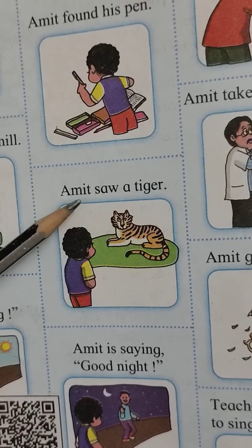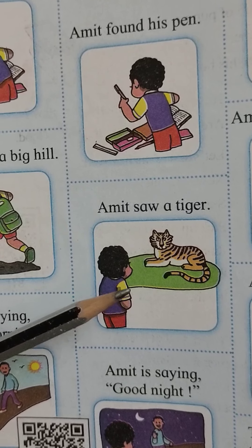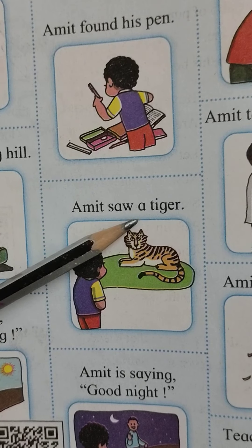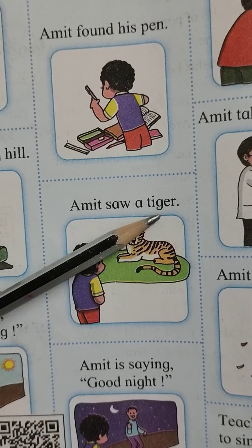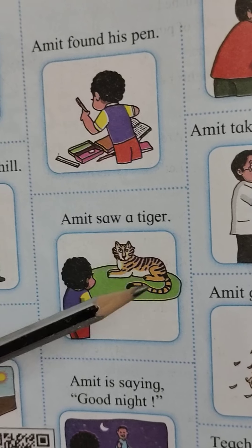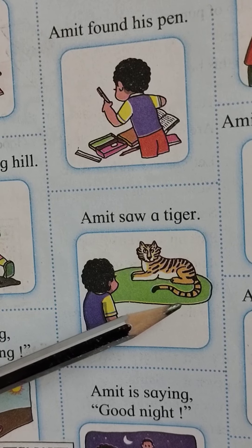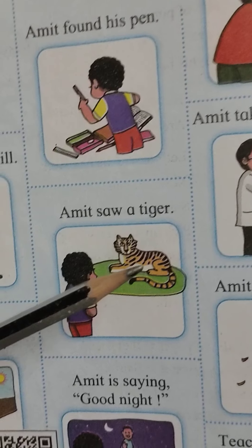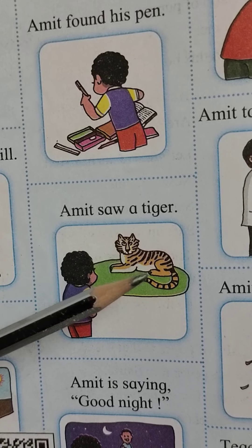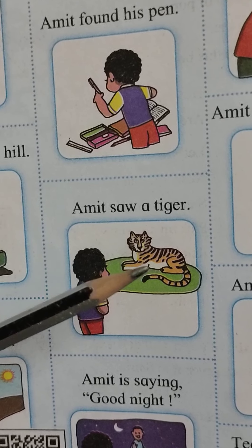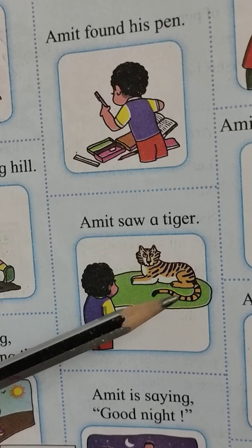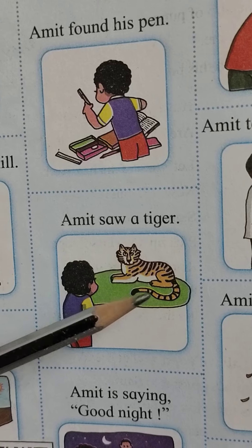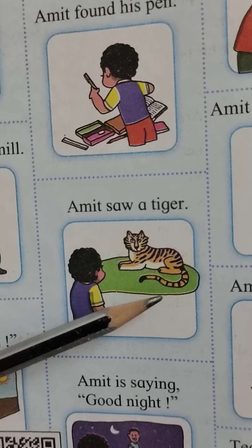See here. Amit saw a tiger. 'Saw' means 'zh bagne,' 'tiger' means 'zh waag' — Amit ni ekha tiger la bagitla. So tell me, if you were Amit and you saw a tiger, what will your face be like? How will you feel? Tumhi ghabroon zalkne. So here you have to make a face of scaring — tumhala ghabar niya zha face yikade karaj zha hai.